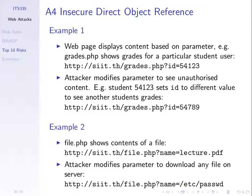We talked earlier about using parameters in the URL where the attacker simply modifies them. It should take the ID of the student, but they change it to someone else's ID, and therefore it allows them to view that other student's information.